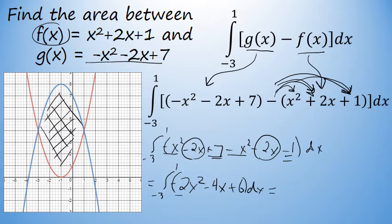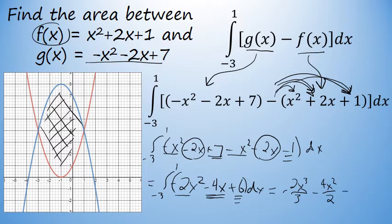We can integrate each individual term using the power rule for integration. The integral of negative 2x squared is negative 2x cubed divided by 3. The integral of negative 4x is negative 4x squared over 2, which simplifies to negative 2x squared. And the integral of 6 is 6x. We will be evaluating this as a definite integral from negative 3 to 1.